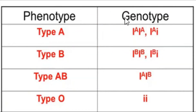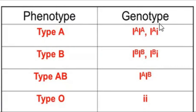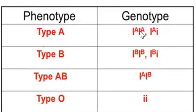For blood groups, you have the phenotype and the genotype. The phenotype is the blood group — what you see, such as blood group A. The genotype describes the composition of that blood group in terms of genes: is it homozygous or heterozygous? You have blood group A, blood group B, blood group AB, and blood group O. Blood group A can be homozygous or heterozygous.